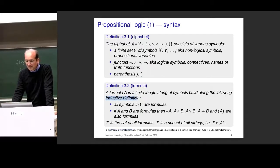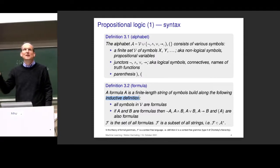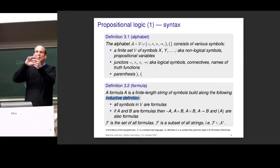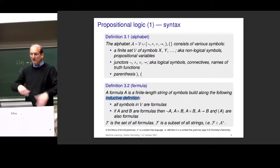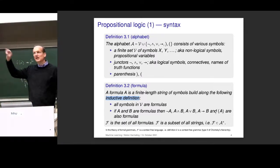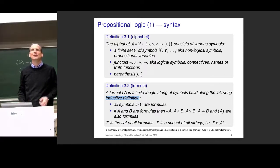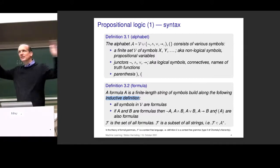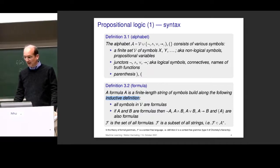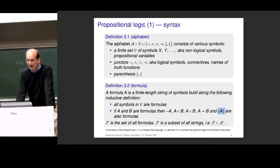This is an inductive definition. Another example of an inductive definition are the natural numbers: zero is a natural number, and if you have a natural number, then plus 1 is another natural number. Similarly, these symbols in V are formulas, and if you have some already, those combined are further formulas. If you want to prove that something like A and B and C is a formula, you start with A, B, C from V, then A and B is a formula, and then A and B and C is also a formula.